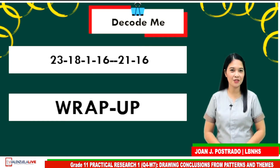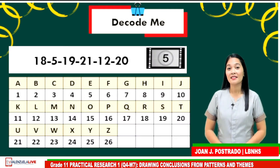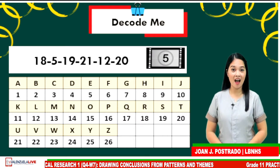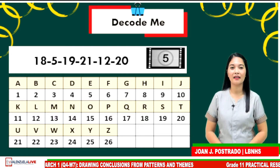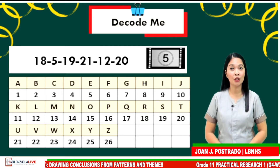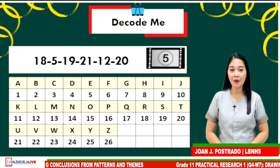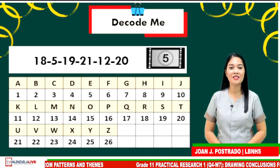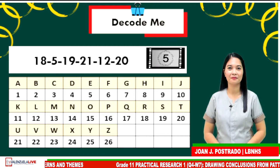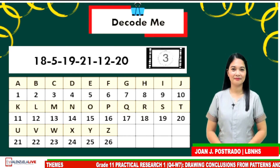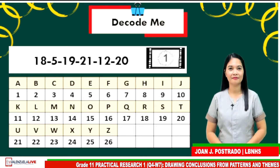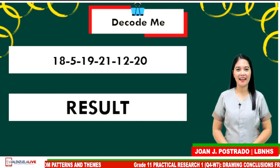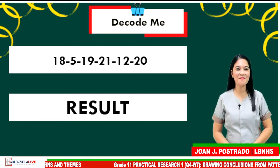Second set of numbers are 18, 5, 19, 21, 12, and 20. Clue: this is the outcome of the investigation. If your answer is result, you are correct. Wow, you are amazing!